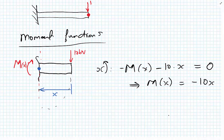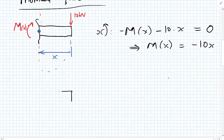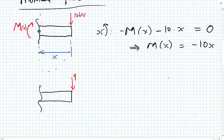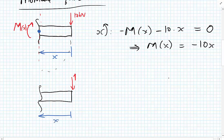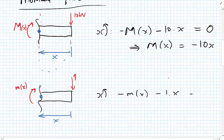We do exactly the same thing for our unit load. We apply the unit load at the point where we wish to know the deflection in the direction we wish to know it — horizontal, vertical, etc. We have the distance x to the cut point. The shear force line of action goes directly through the point where we're taking moments. Taking moments about x: minus m(x) minus 1·x equals 0, and therefore m(x) equals minus x.